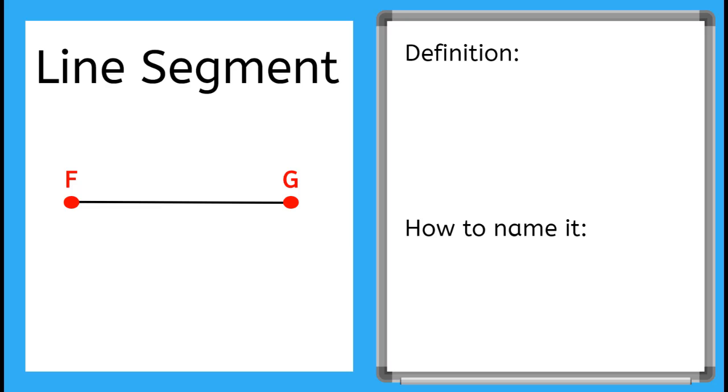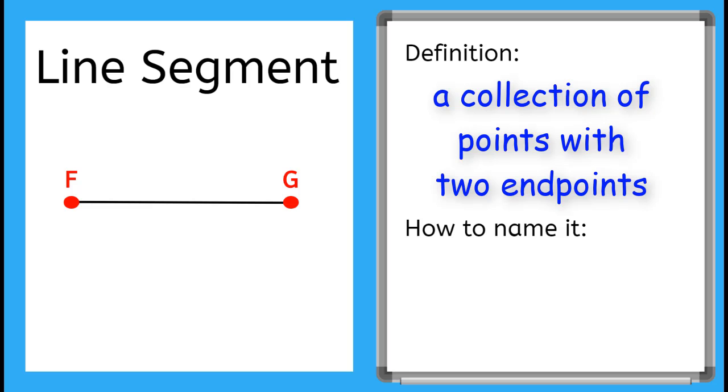Our next geometric shape is a line segment. We know that this is a line segment and not a line because it has two endpoints. We see the two points here, and the endpoints have been named, point F and point G. We can name a line segment by using the name of the endpoints with a symbol on top. The symbol is a small line segment.